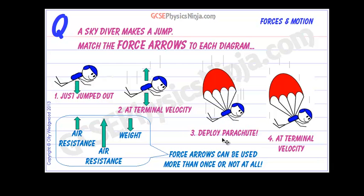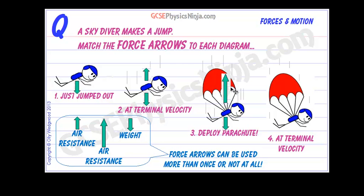Then the skydiver deploys the parachute. When the parachute opens, there is suddenly a much bigger surface area and a much larger upwards drag force, because they are still moving very quickly downwards. We have the weight force — which hasn't changed — and this much bigger upwards drag force. There is an imbalance of forces, meaning there is a resultant force, and the winning upward force causes the skydiver to decelerate.